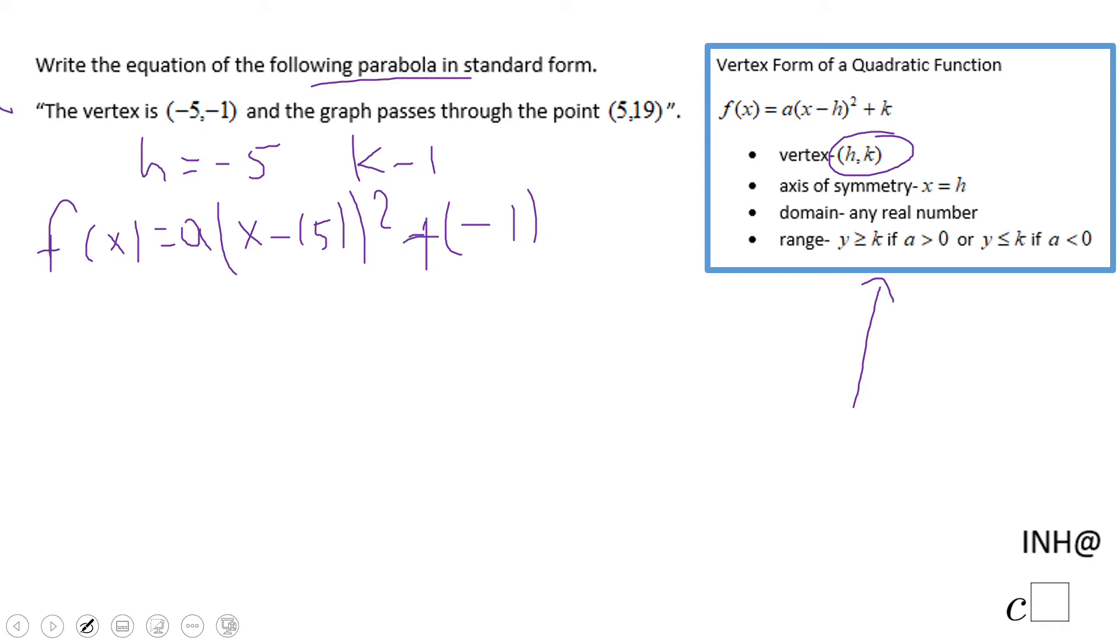We can simplify this equation. We have a times (x minus negative 5), which becomes (x + 5) squared minus 1.